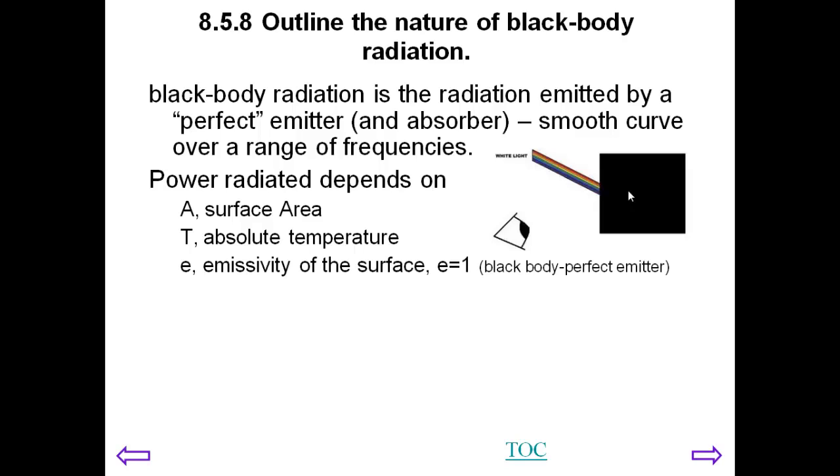This value E which is the emissivity of the surface. When E is equal to 1 it is able to basically be a black body, a perfect emitter. It follows exactly the black body radiation curve, emission curve.